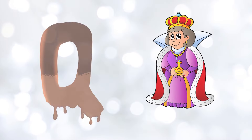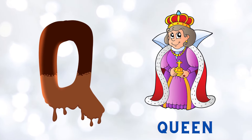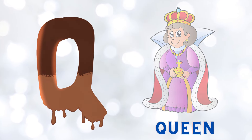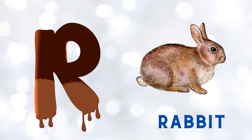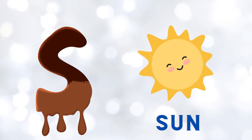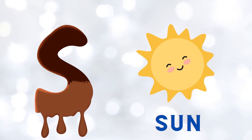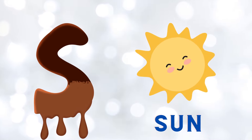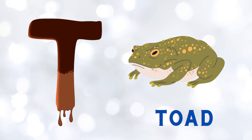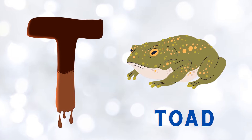Q is for queen, k-k-queen. R is for rabbit, r-r-rabbit. S is for sun, s-s-sun. T is for toad, t-t-toad.